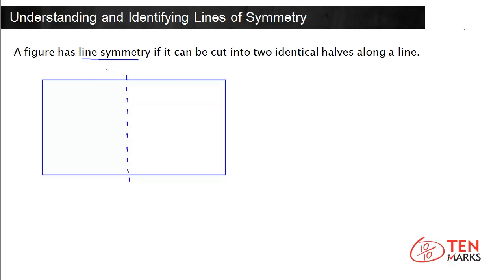Think of the line as a mirror. If half of the figure is a perfect reflection of the other half, then that figure has line symmetry. Each half folds exactly over the other.